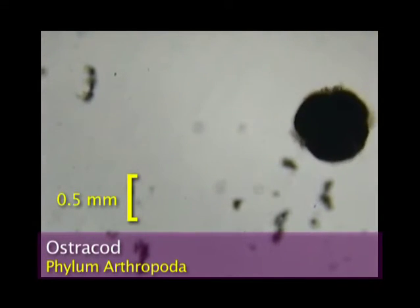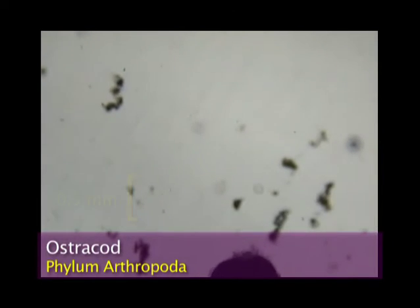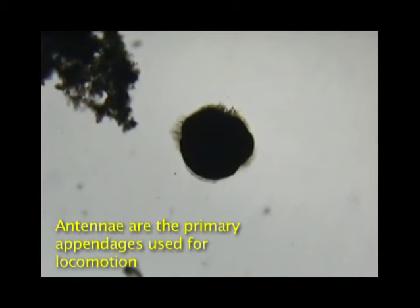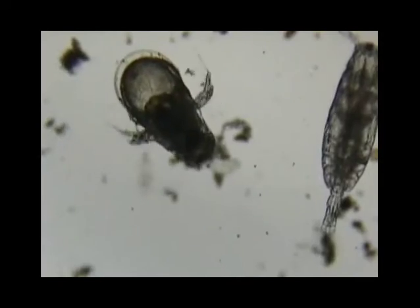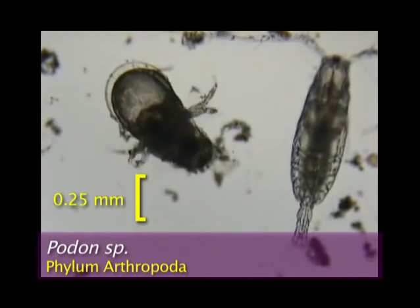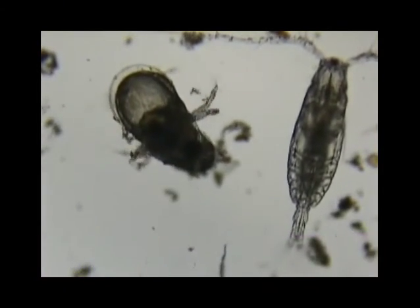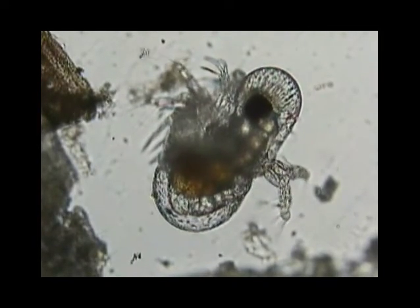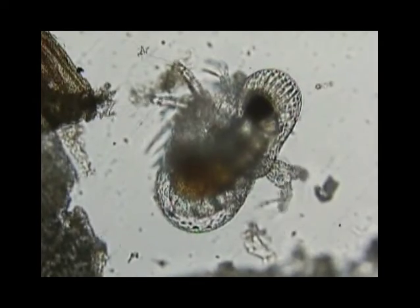Ostracods are tiny arthropods housed between two shells. Podon is a type of crustacean called a cladoceran. The female Podon has a large compound eye and a brood chamber holding her eggs.